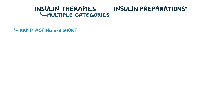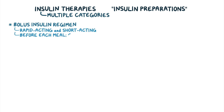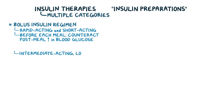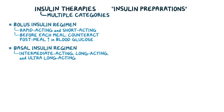Rapid-acting and short-acting insulins are used for bolus insulin regimen, where they are taken before each meal to counteract the post-meal increase in blood glucose. Intermediate-acting, long-acting, and ultra-long-lasting insulins are used for basal insulin regimen, to maintain a steady background level of insulin throughout the day. They are given once or twice daily to regulate the basal, or fasting blood glucose level.